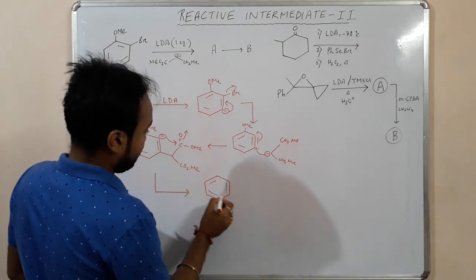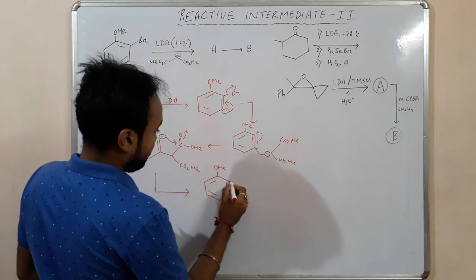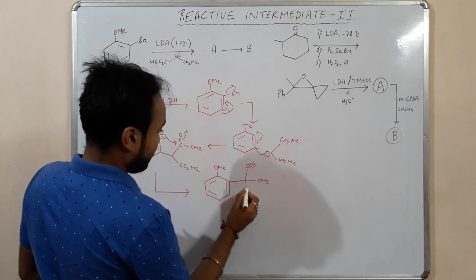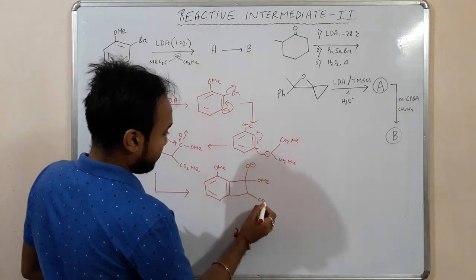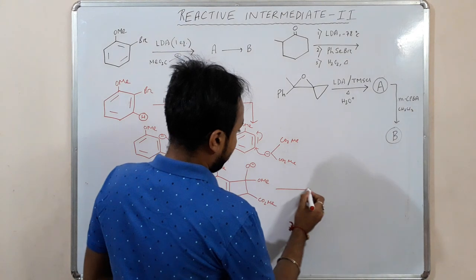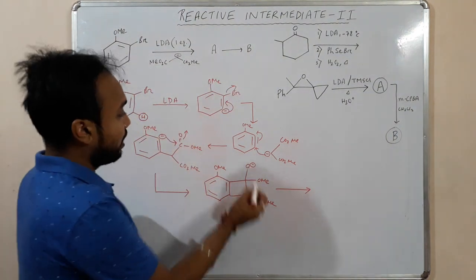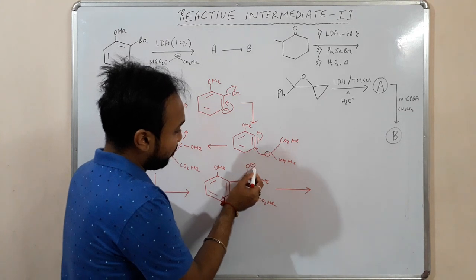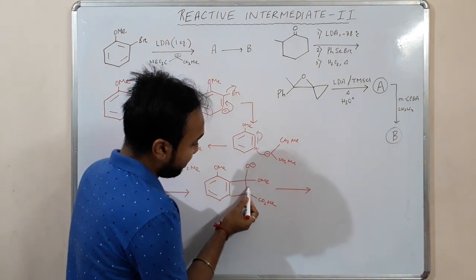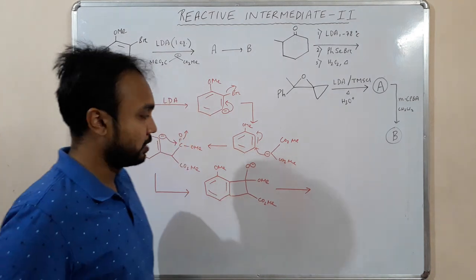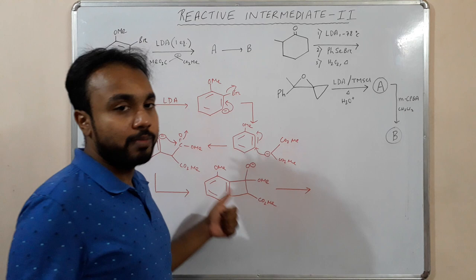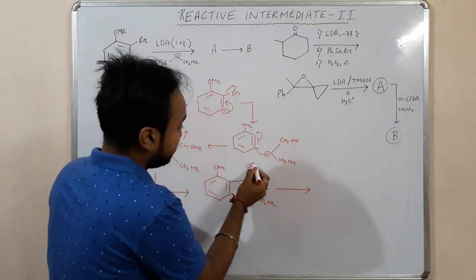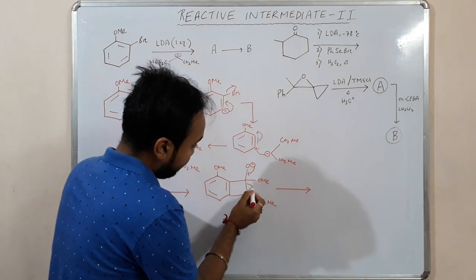If the A* group attacks here, we get a four-membered ring with O⁻, OMe, and CO₂Me. There are two possibilities: either the electron cloud comes here and leaves OMe, or the electron cloud comes here and this bond breaks with formation of a negative charge. Since it's a four-membered ring, it is not very stable, so there is cleavage of the four-membered ring.